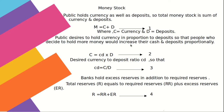Money stock. What is money stock? Basically, money stock is M equals currency plus deposits. The public holds currency as well as deposits, so total money stock is the sum of currency and deposits: M = C + D. The public desires to hold currency in proportion to deposits, so people who decide to hold more money would increase their cash and deposits proportionally.